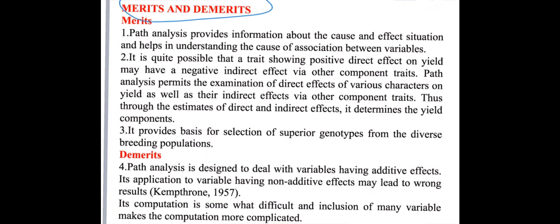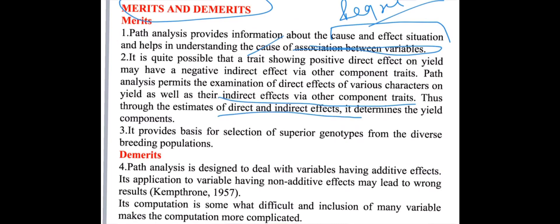The merits of path coefficient analysis: this analysis gives information about the cause-and-effect situation, since it is a partial regression coefficient — and regression represents cause and effect while correlation represents association. It gives information about the direct effect of various characters on yield as well as indirect effects by other component traits. Path analysis also provides a basis for selection of superior genotypes from diverse breeding populations, identifying which component traits directly or indirectly affect yield.